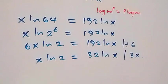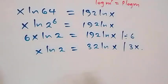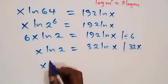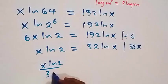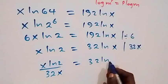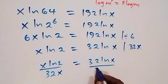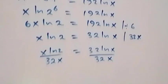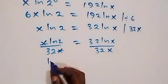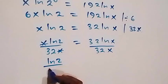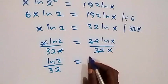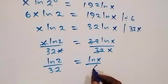Dividing by 32x on both sides: we have x ln 2 over 32x equals to 32 ln x over 32x. Which implies that x cancels x, giving us ln 2 over 32 equals to, and here 32 cancels out, giving ln x over x.